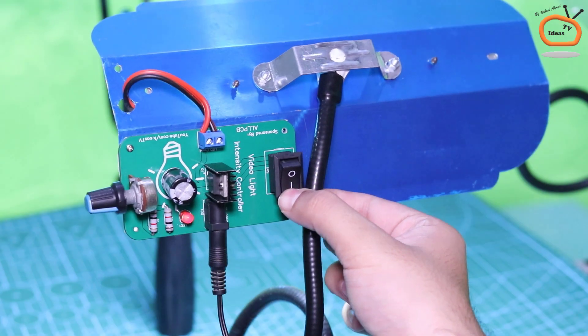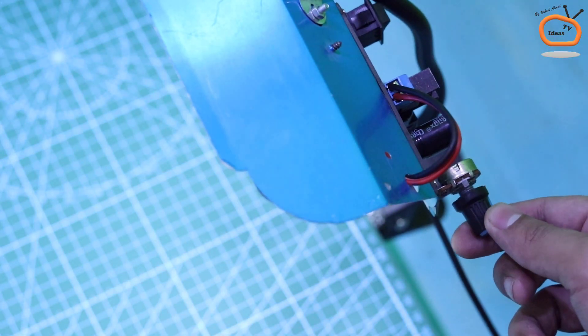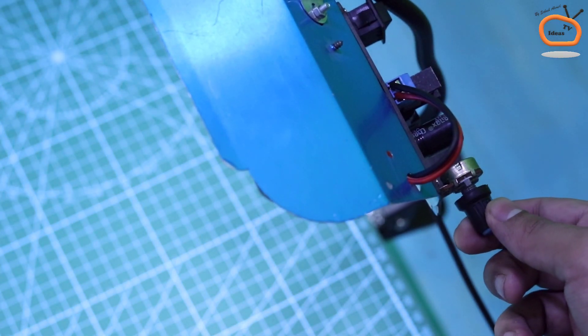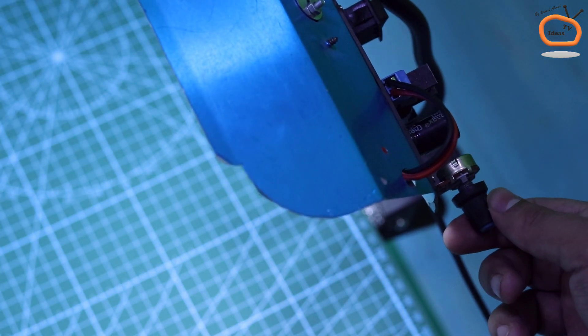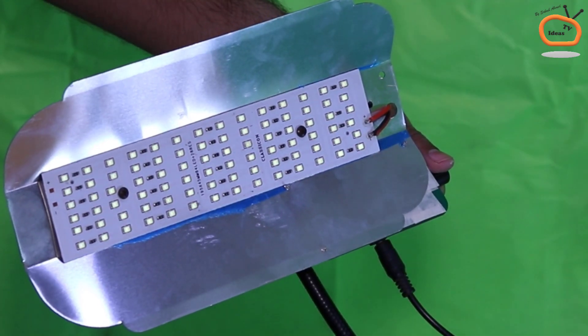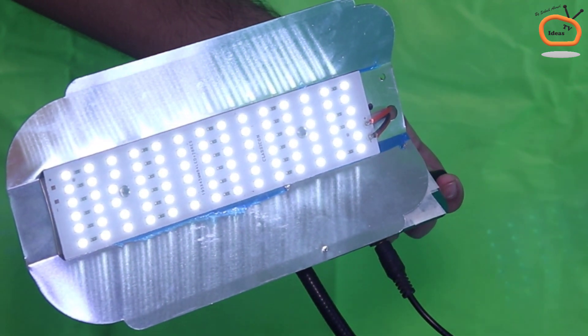A separate on-off switch and intensity variable in each light make it more convenient to control each light separately. By using the variable, you can precisely control the intensity of your video light.